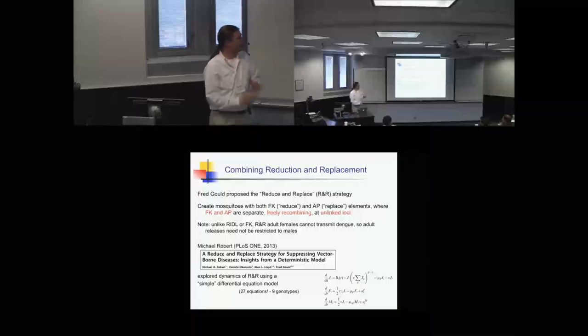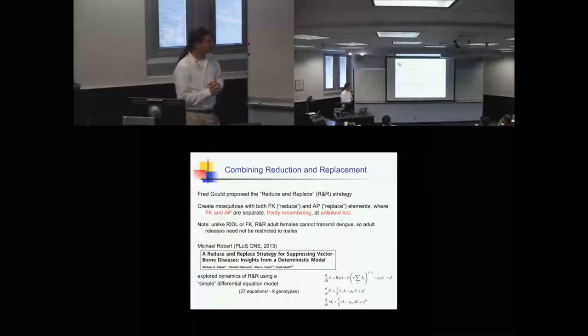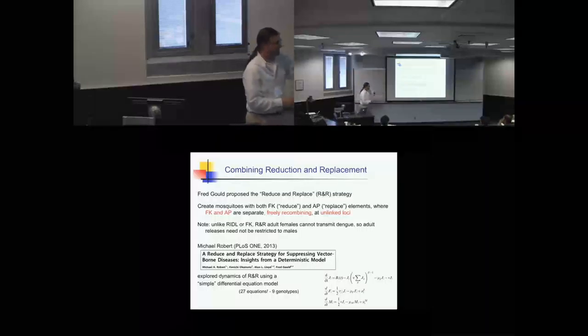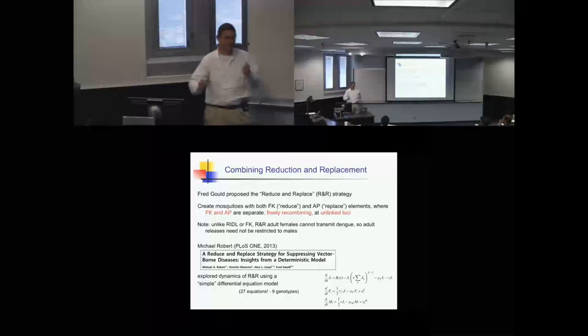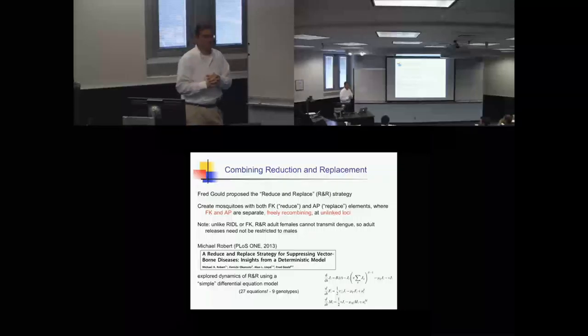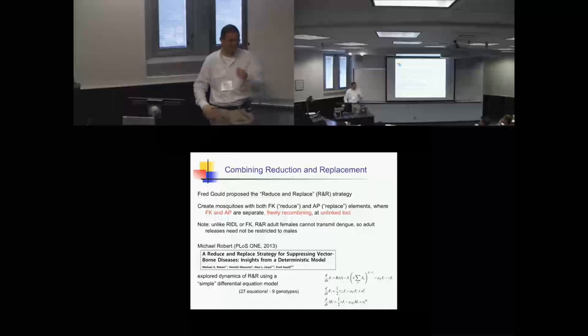We decided to ask a different question. Can we achieve population replacement without using a gene drive mechanism? What Fred Gould proposed was taking this sterile approach, like the Oxitec approach, and combining it with an anti-pathogen gene. He dubbed this reduce and replace. The idea is you have mosquitoes that have separate sterile genes and anti-pathogen genes. One interesting thing is that because your mosquitoes have an anti-pathogen gene, they can't transmit dengue. So unlike the Oxitec situation, you can actually release female mosquitoes as well.